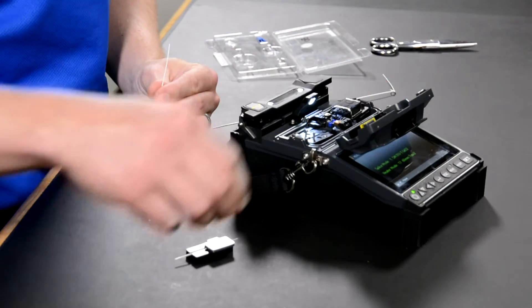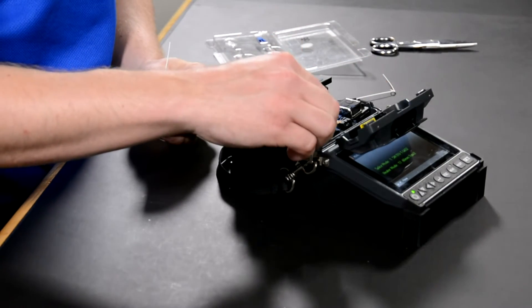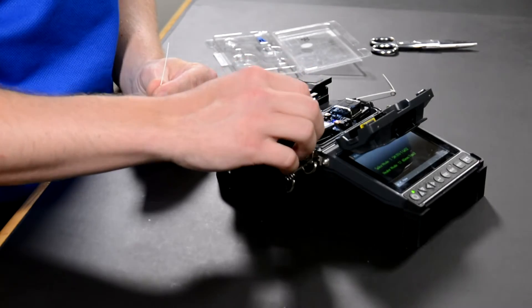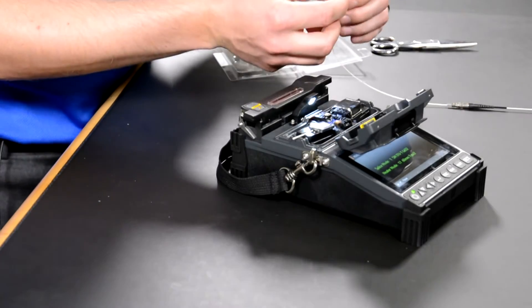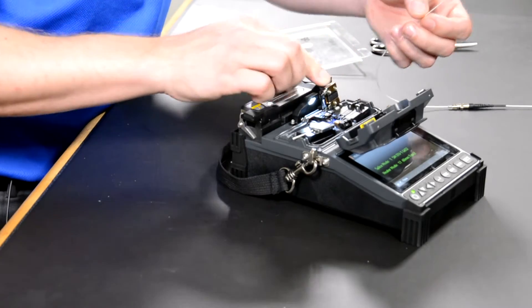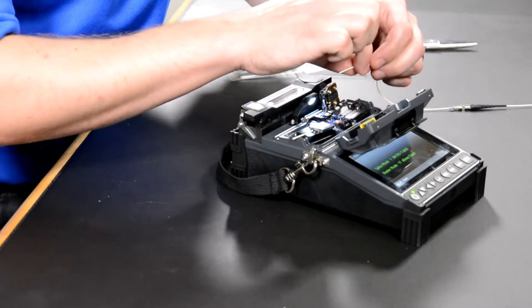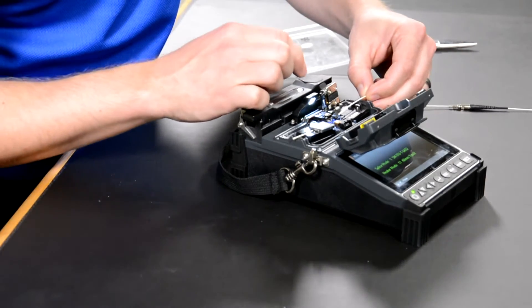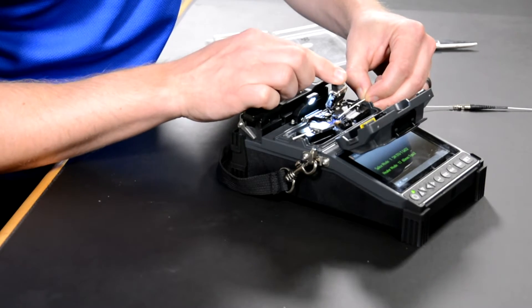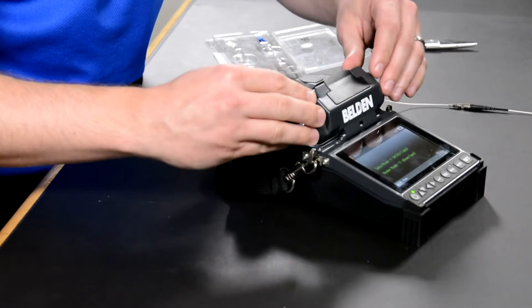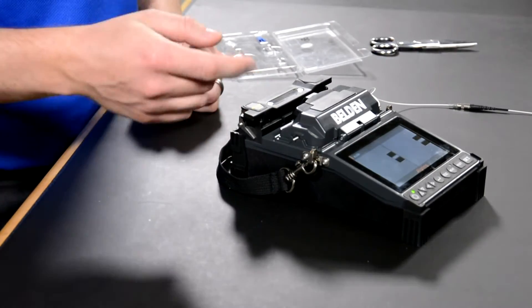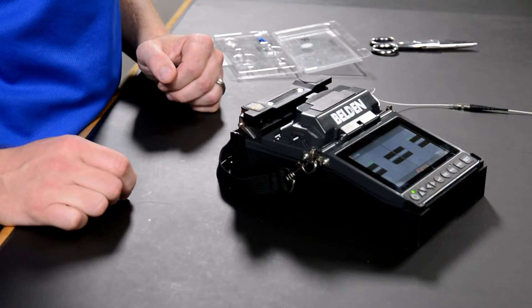If you haven't done so already, please load the holder into the fusion splicer on the left side of the splicer. Now we can load the fiber on the other side and we'll want to get the end face close to the electrode but not past it. We'll lock that in and then close the wind cover and bring the two ends close together and align them.